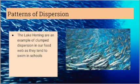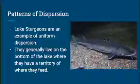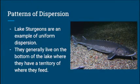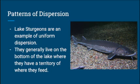A population of lake herring is an example of clumped dispersion, because they tend to swim in schools and are generally clumped together. Lake sturgeons are an example of uniform dispersion, because they are solitary and generally live on the bottom of the lake, where they have a territory of where they feed.